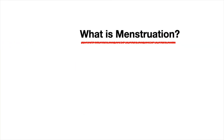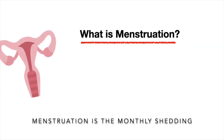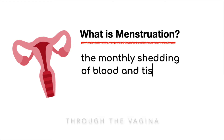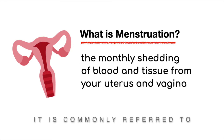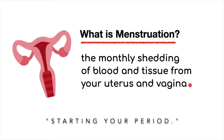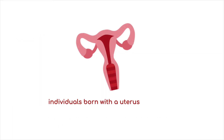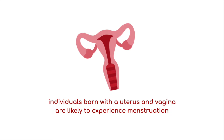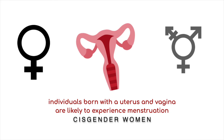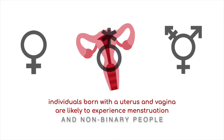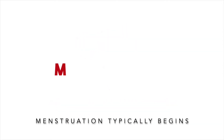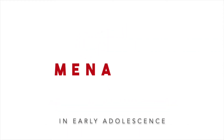What is menstruation? Menstruation is the monthly shedding of blood and tissue from the uterus through the vagina. It is commonly referred to as a period. Anyone born with a uterus and a vagina is likely to experience menstruation. Possible menstruators include cisgender women, transgender men, and non-binary people.